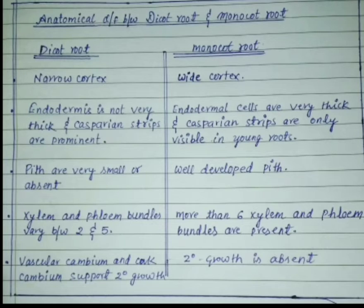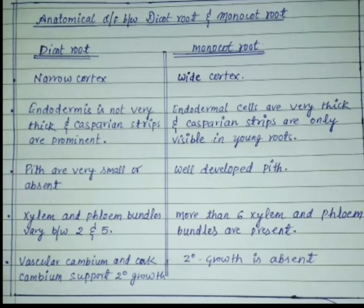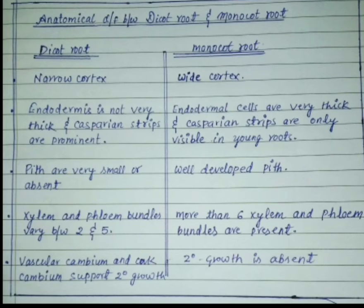Xylem and phloem bundles vary from 2 to 5 in dicot root, whereas in monocot root the xylem and phloem bundles are more than 6.